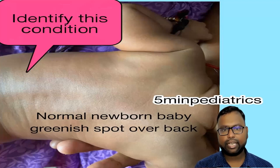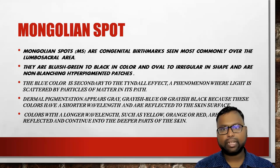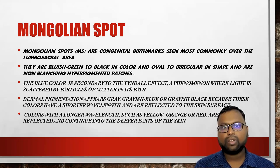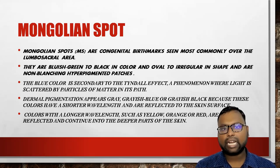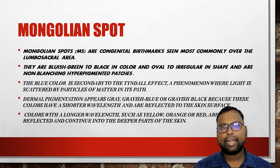This is a case of Mongolian spot. Earlier we considered it as a normal entity, but now there are some points you have to remember and you have to further work up in that condition. Mongolian spots are congenital birthmarks seen mostly over the lumbosacral region, that is the gluteal area. They are bluish-green to black in color, oval in shape, and are non-blanching hypopigmented patches.